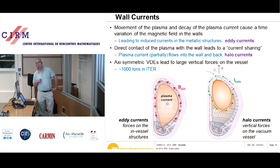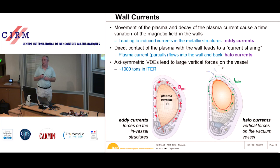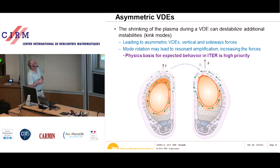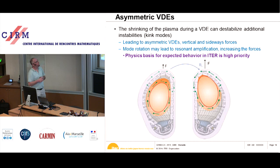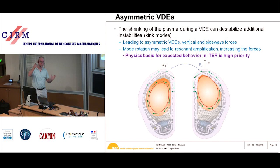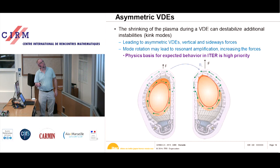These forces can be up to 100 tons, which is extremely large. The mechanical structure of ITER is made strong enough to support these forces, but you shouldn't have disruptions too often. A particular concern for ITER is asymmetric VDEs, where during the vertical displacement event a secondary external kink instability develops, causing the plasma to tilt. The halo current sharing then occurs only on one side, producing a large net tilting force on the machine that needs to be avoided.